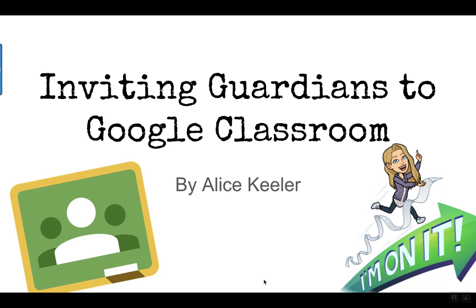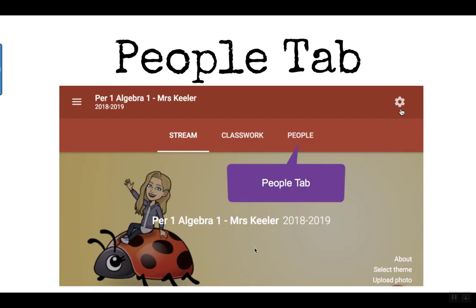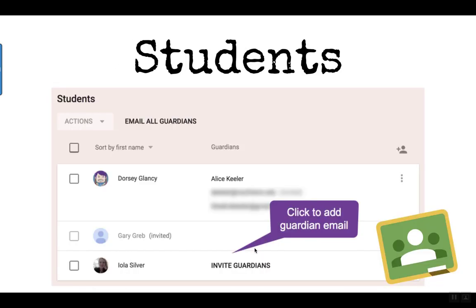Invite guardians to Google Classroom — not to be part of the classroom, but to receive a summary email about their student's progress. Go to the People tab, where you'll find the list of students, and click 'Invite guardians' if no guardians have been invited yet. Click on that to add the guardian email.